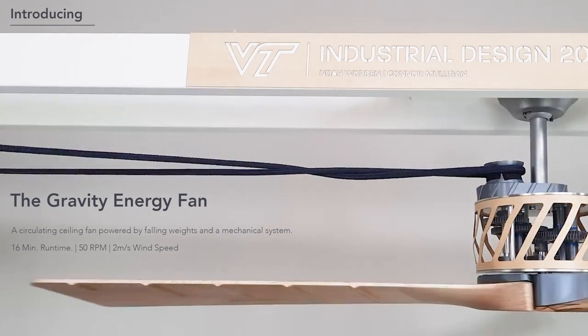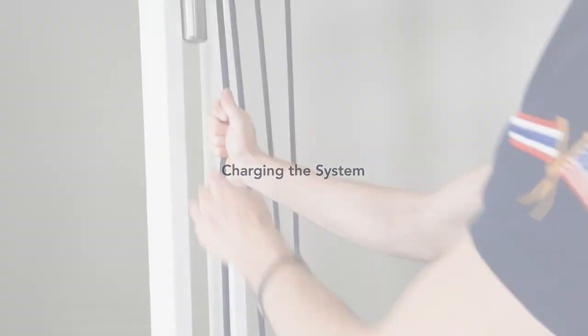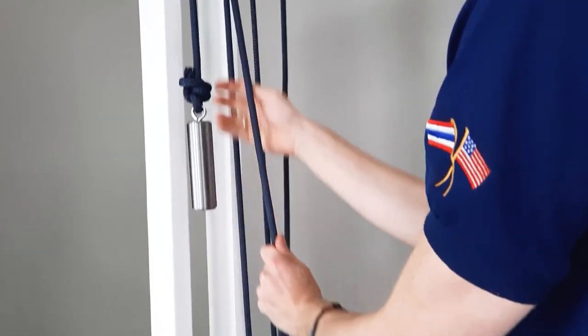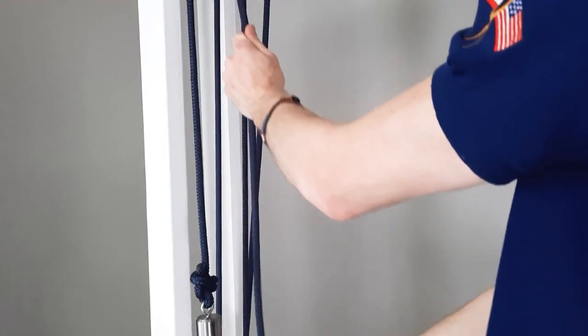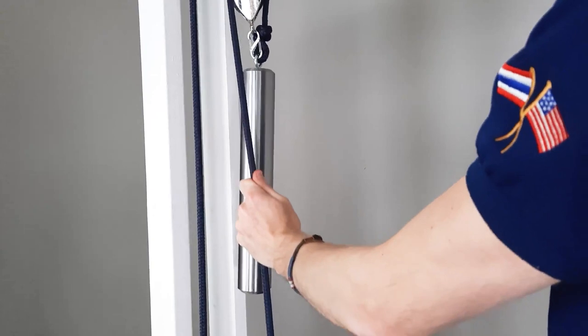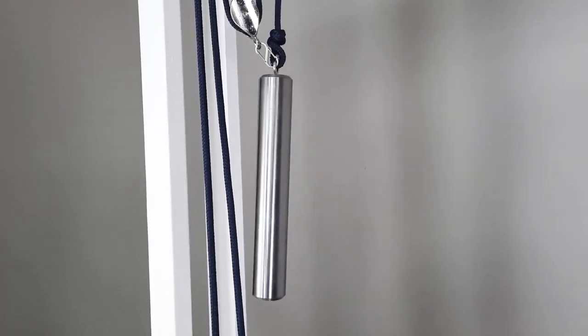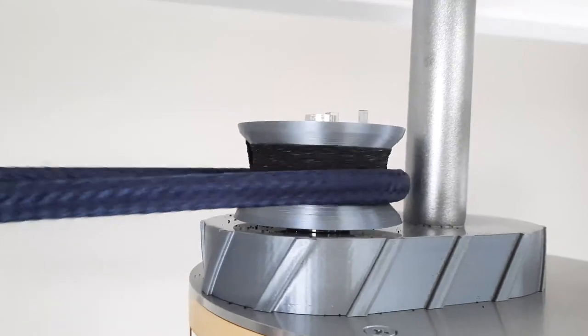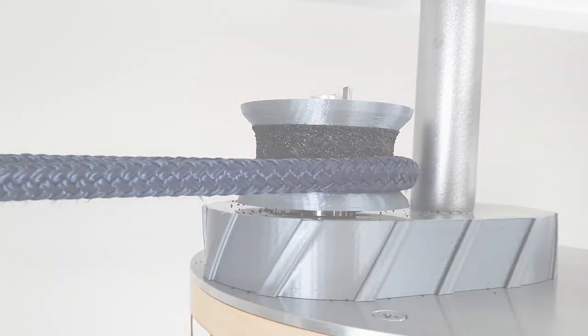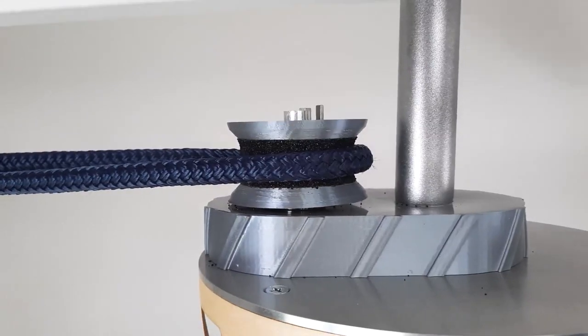Let's take a deeper look at the Gravity Energy Fan. To use it, you first have to charge the system. The user pulls down on a rope connected to a snatch block pulley system. This lifts the larger weight. As the counterweight falls, the one-way bearing in the drum rotates freely in reverse. When the user lets go, the fan begins running. The weights fall past each other, turning the drum that powers the fan.